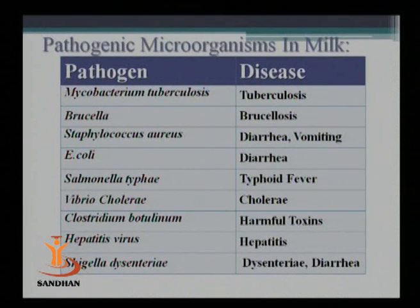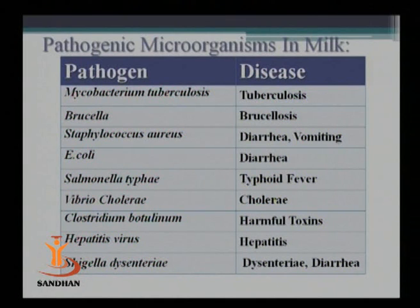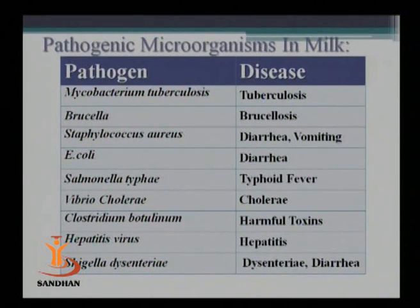In this tabular chart I will explain which pathogen is related to which disease commonly found in human beings. Mycobacterium tuberculosis is associated with tuberculosis. Brucella gives brucellosis. Staphylococcus aureus causes diarrhea and vomiting. E. coli leads to diarrhea. Salmonella typhi gives typhoid fever. Vibrio cholerae causes cholera. Clostridium botulinum is a toxin-producing organism and will produce harmful toxins. Hepatitis virus causes hepatitis in human beings. Shigella dysenteriae gives dysentery or diarrhea-type disease.